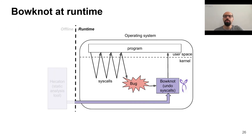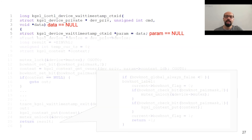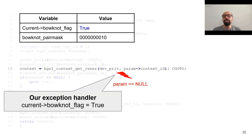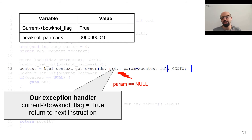Now let's see the bonot workflow at runtime. Let's assume the user-space application passes null as the last argument to this function, so the variable paron becomes null as a result. The first statement to execute is this mutex lock. The conditional jump after the mutex lock does not have any effect because the bonot flag is false. Then we set the second bit of our pair mask to 1, which shows that we executed the mutex lock. Here, the null pointer dereference causes an exception. Instead of rebooting the system, we call our exception handler, which sets the bonot flag to true. Our exception handler then returns execution to the next instruction.